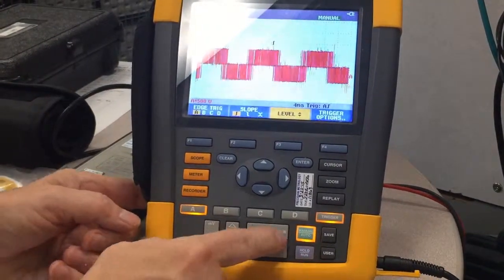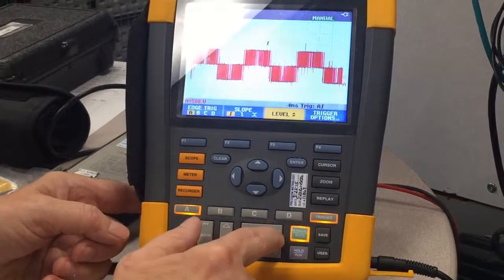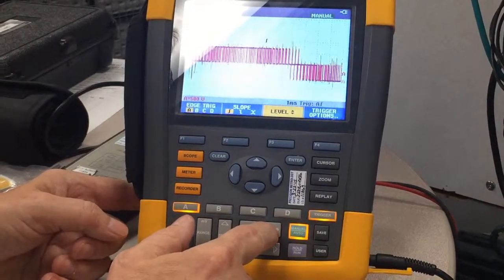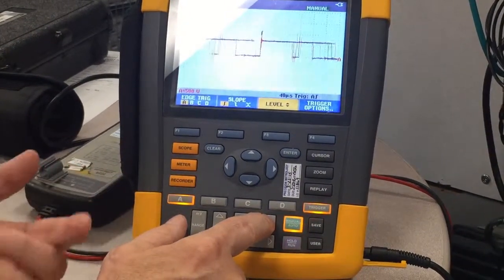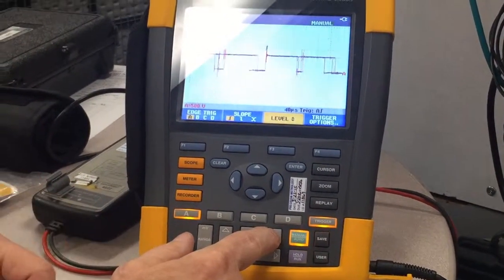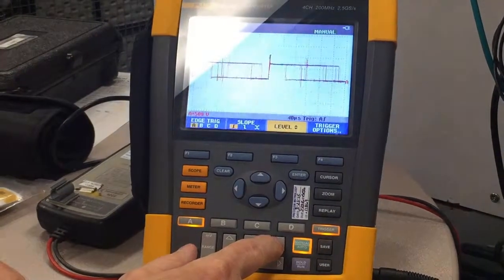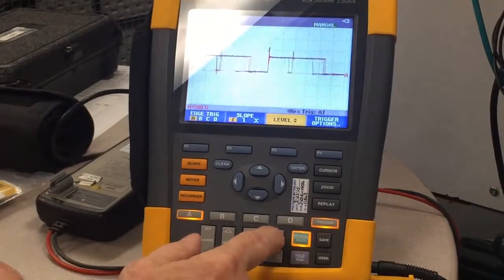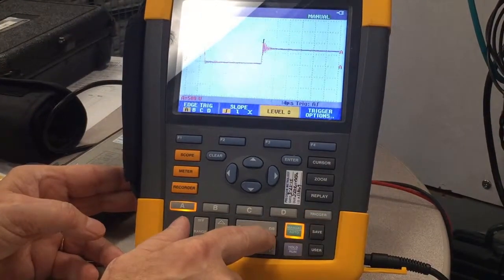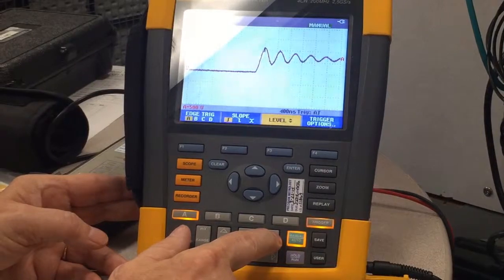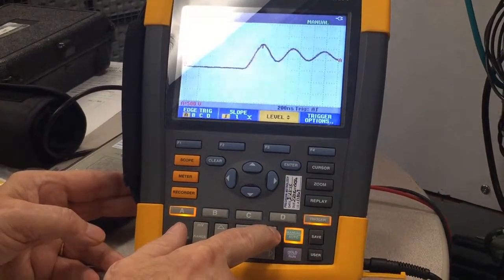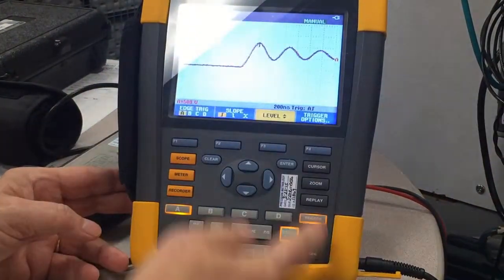And then, the next thing we want to do is we want to expand this waveform out. So, we take the time button and then press the NS side. So, we decrease our times per division. The whole goal of capturing a reflective wave voltage is to see the rise time of the voltage and the peak value. So, we keep on decreasing our horizontal scaling until we get a pulse, which gives us the rise time and the peak value.